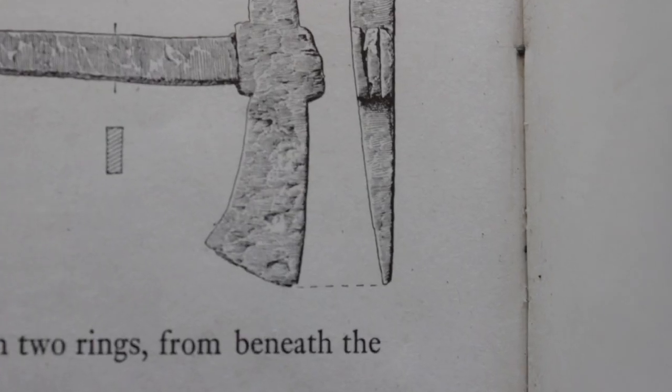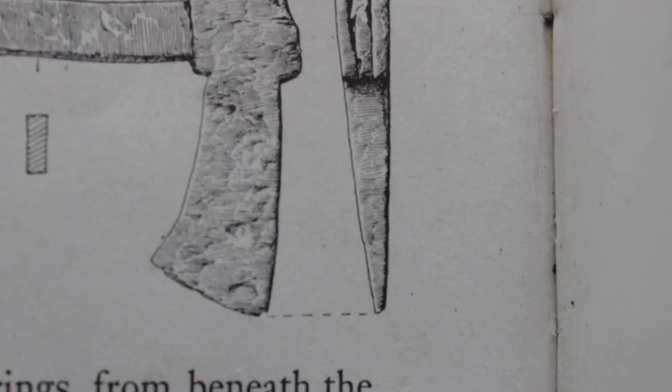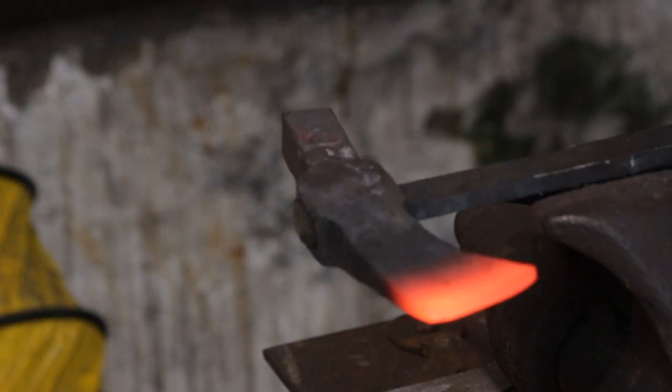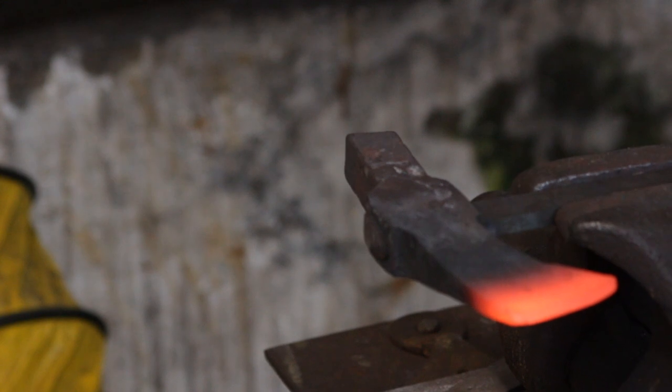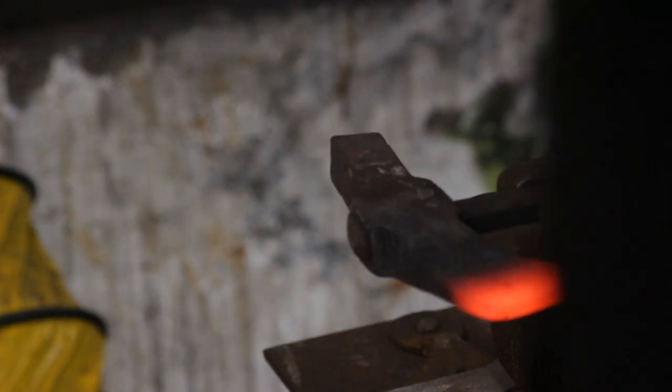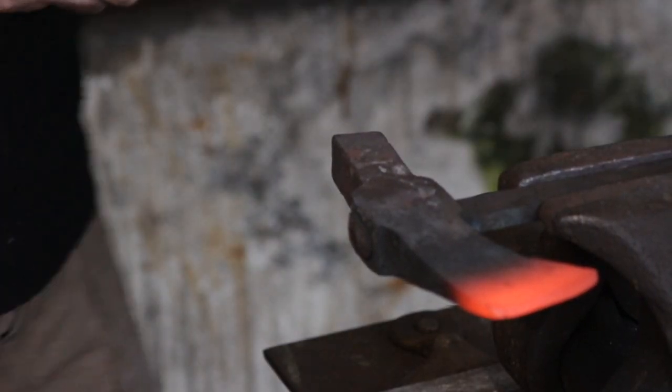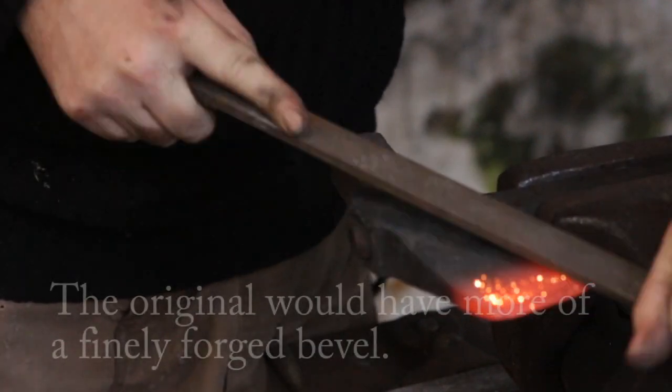The next thing we're going to do is to put an edge on the actual axe blade. I'm going to hot rasp this because I believe that that's probably the way the Anglo-Saxons would have done it, because hot rasping goes a bit quicker than cold rasping and I don't think they'd have had spinning grindstones at the time.